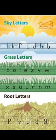What are Grass Letters? The letters which come in the middle two lines are Grass Letters. We have 14 Grass Letters: C, O, I, E, Z, V, W, X, S, O, U, R, N, and M.